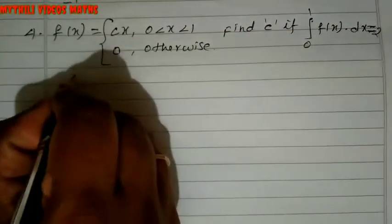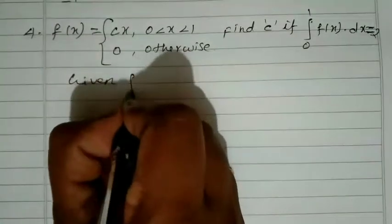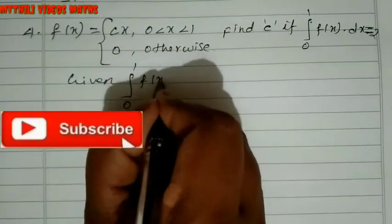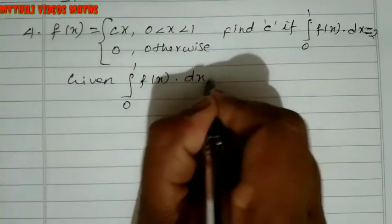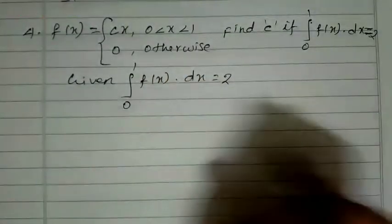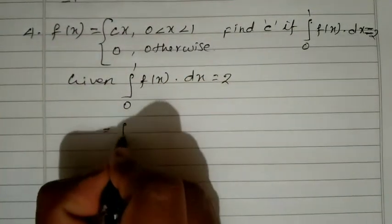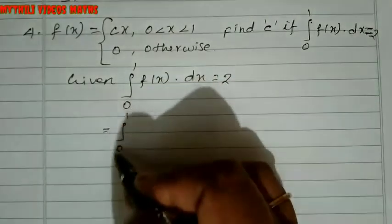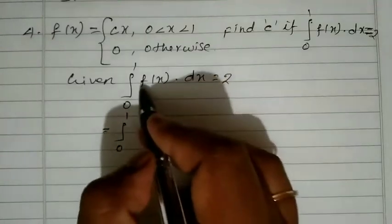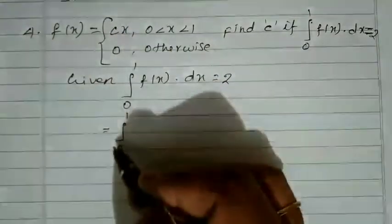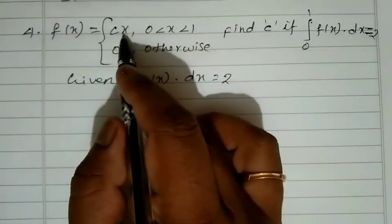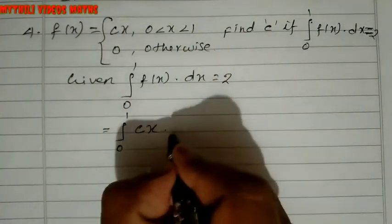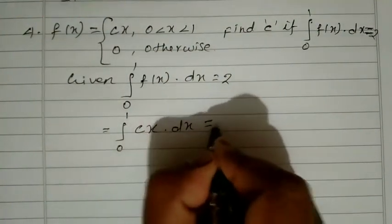Given: integral from 0 to 1 of f(x) dx = 2. Since from 0 to 1 the function is cx, we write: integral from 0 to 1 of cx dx = 2.